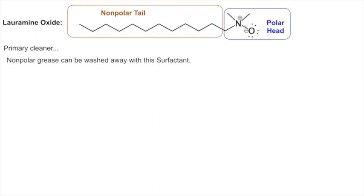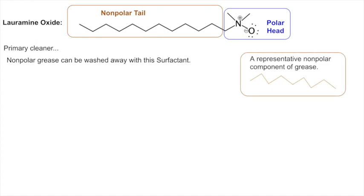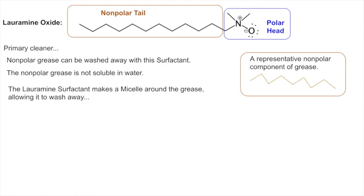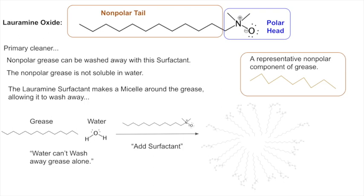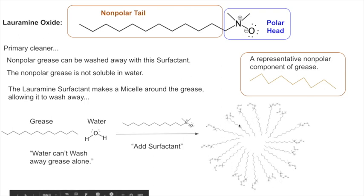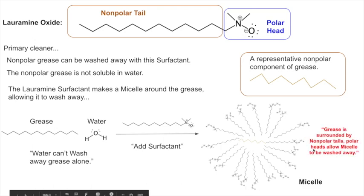Non-polar grease can be washed away using a surfactant. Grease is not water-soluble because water is polar and grease is non-polar. But a surfactant forms a micelle — a three-dimensional ball — with its non-polar tails pointing to the inside and charged portions on the outside. The grease goes into the center of the micelle because like dissolves like, and then the charged outer surface allows water to wash it away.